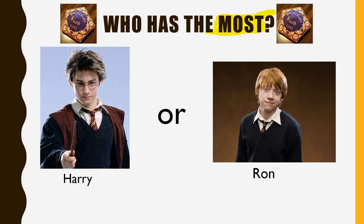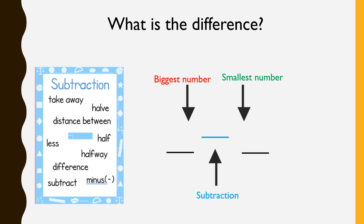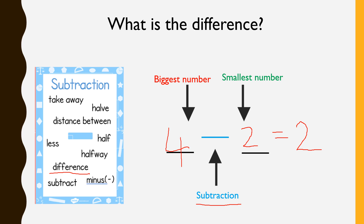So you've now got the answer — how many Harry had and how many Ron had. The question is asking us who has the most. With the word 'most', it means the biggest number. The next part asks what is the difference. On screen I've got a subtraction key vocabulary card and the word 'difference' is on there, which lets me know I need to use subtraction. To find the difference between two numbers, take away the smallest number from the biggest. For example, the difference between 4 and 2 is 2. That's the same way you'll find the difference between Harry's number and Ron's number.